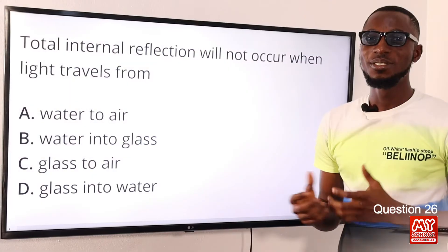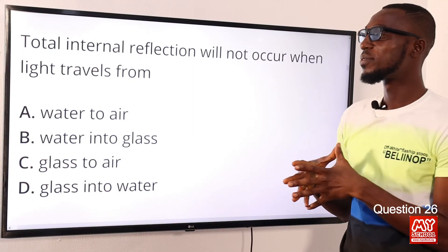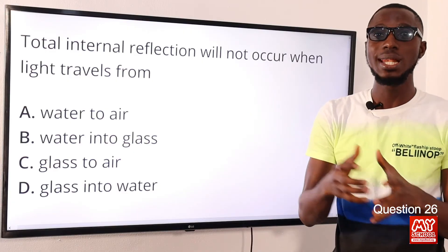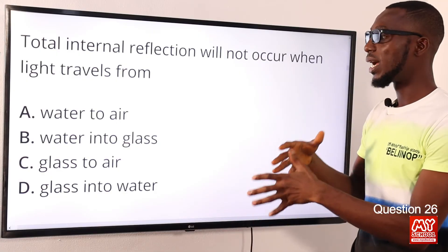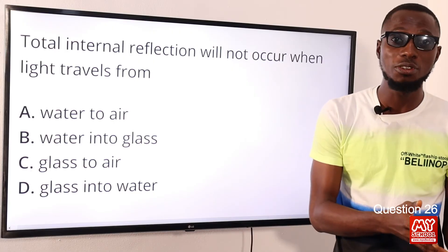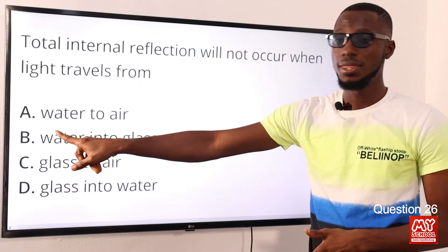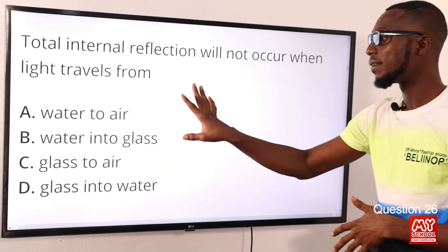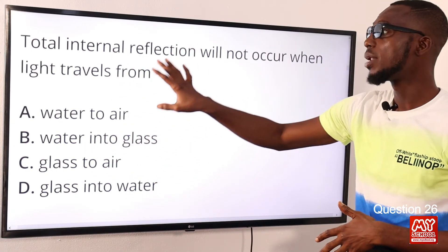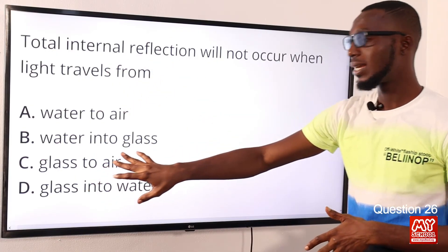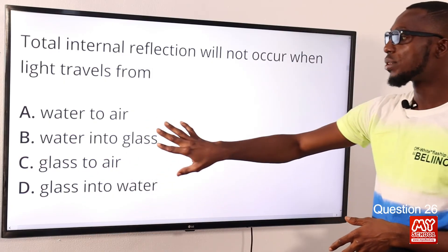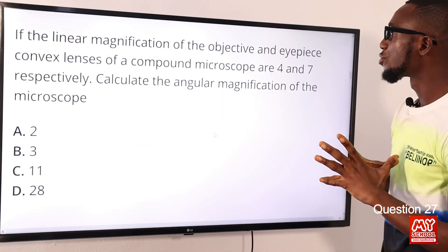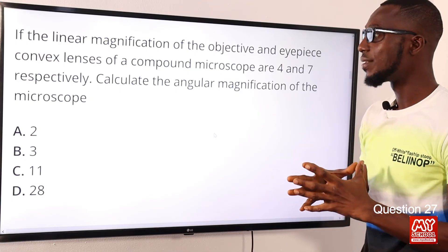Question 26: Total internal reflection will not occur when light travels from where to where? One necessary condition is that light must travel from a denser medium to a less dense medium. Checking the options: water to air satisfies this, water into glass does not — glass is denser than water. Glass to air satisfies it, and glass into water also satisfies it. Option B — water into glass — is the only deviation, so option B is the correct option.